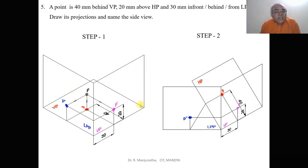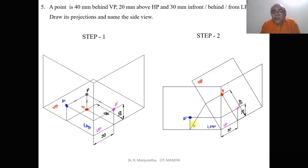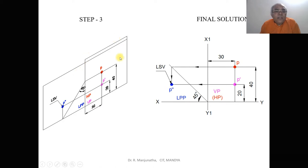To convert to orthographic, we cut and rotate HP to the top and LP to the left side. In step three you can see that the vertical plane and horizontal plane are overlapping, and LPP comes to this side. In the orthographic view, the distance behind VP is seen in HP, so this point will be the top view. The distance above HP is seen in VP, which is above the XY line.